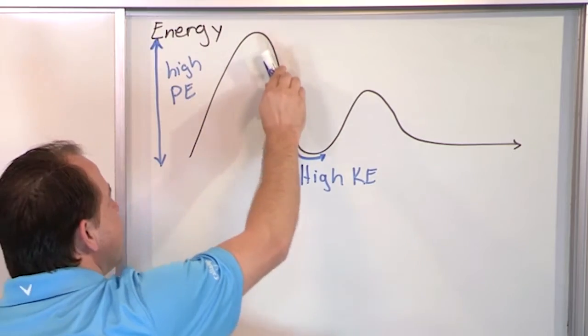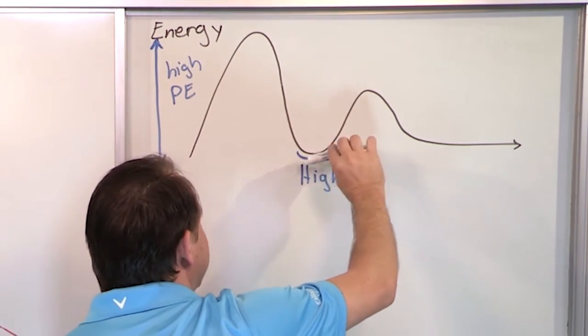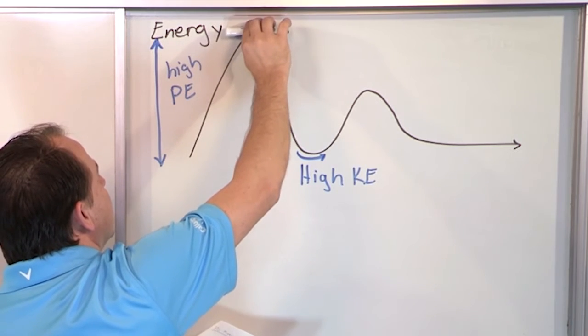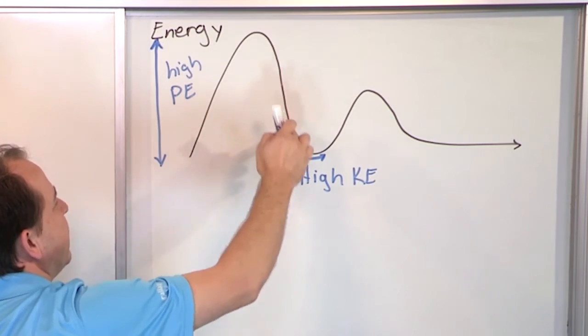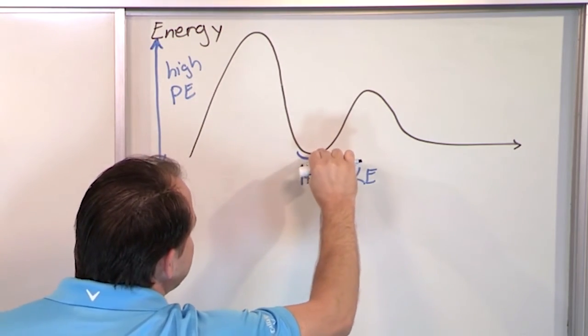So you know when you get to the bottom of the trough here, in the roller coaster, you're going fastest. Up here, you're going slow. So you have very low potential energy here. I mean, sorry, high potential energy here. And it's all converted into kinetic energy.